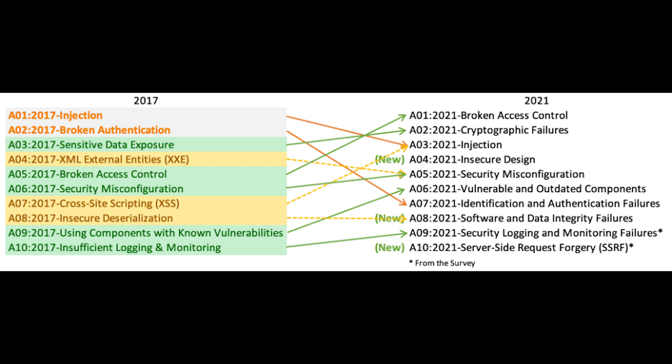Next, we have security logging and monitoring failures. Failing to log errors or attacks and poor monitoring practices can introduce a human element to security risks. Threat actors count on lack of monitoring and slower remediation times so that they can carry out their attacks before you have the time to react. To prevent issues with insufficient logging and monitoring, make sure that all login failures, access control failures, and server-side input validation failures are logged with context so that you can identify suspicious activity. Pen testing is a great way to find areas of your application with insufficient logging as well. Establishing effective monitoring practices is also essential.